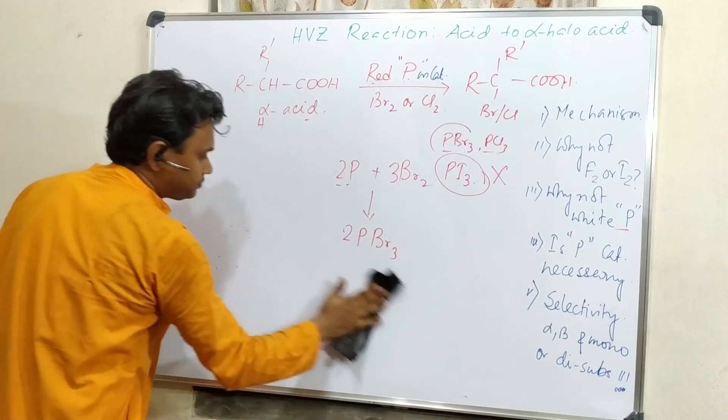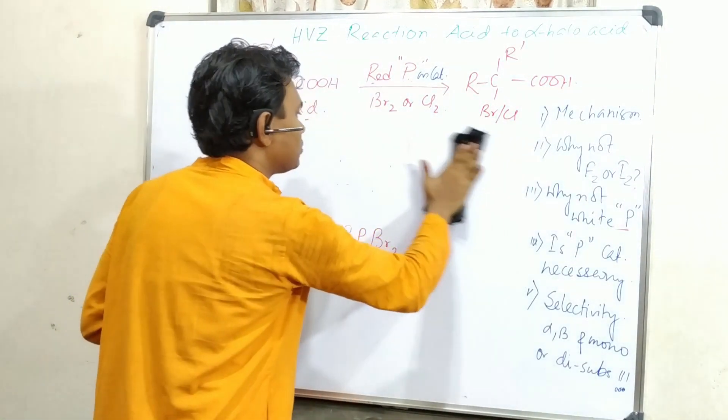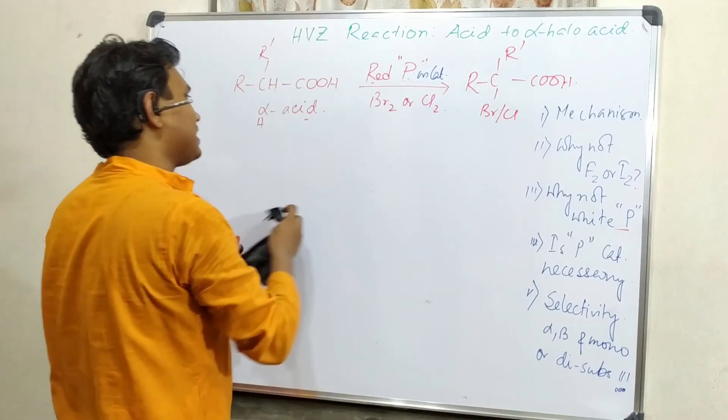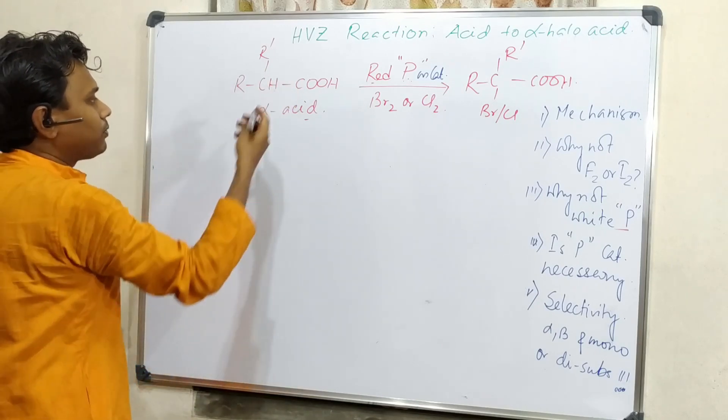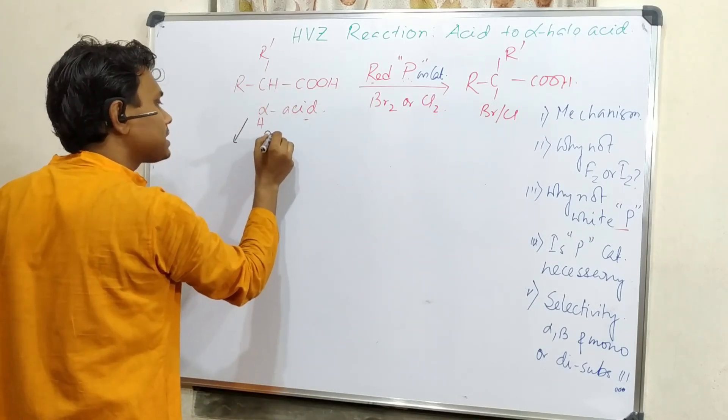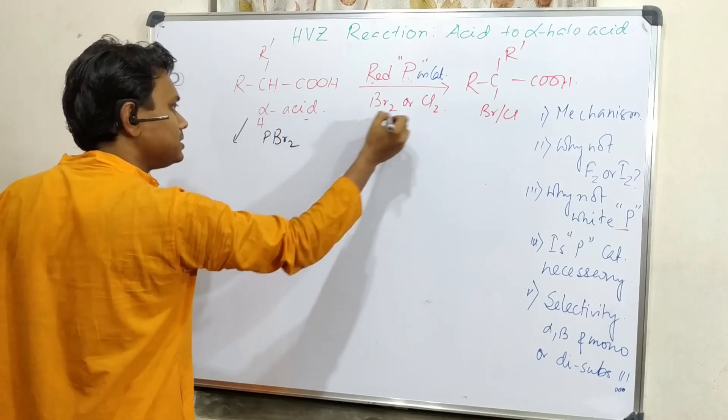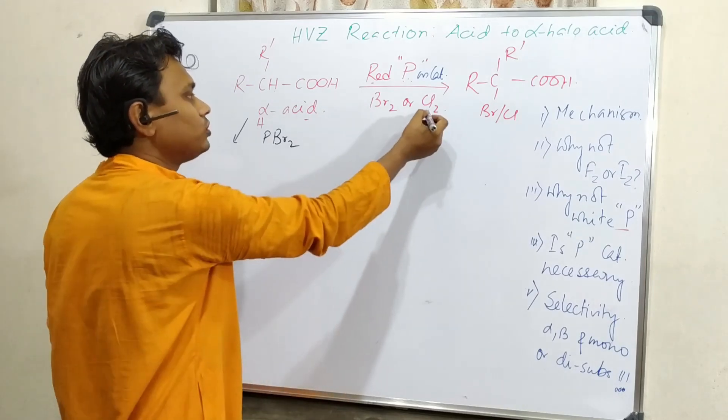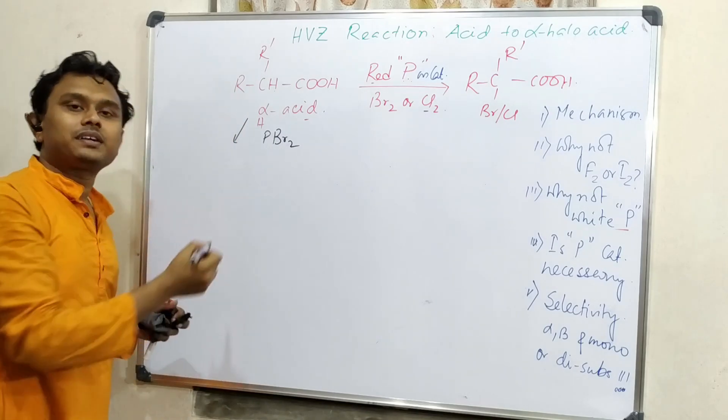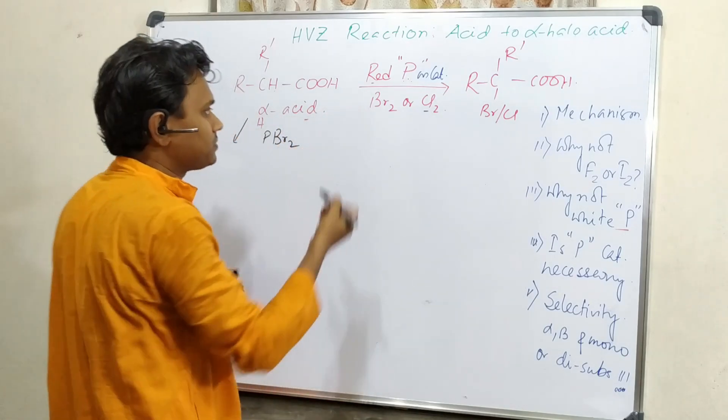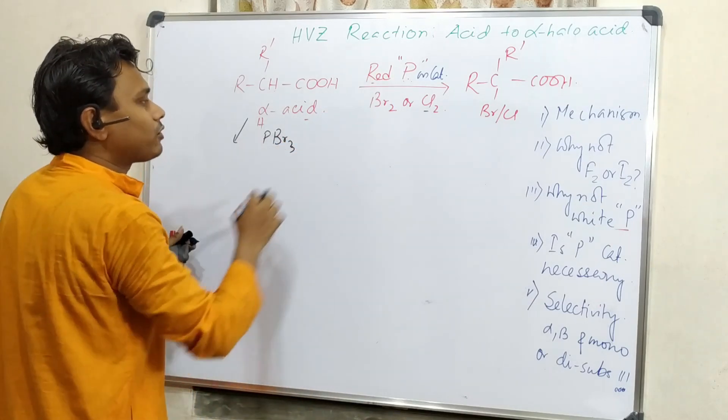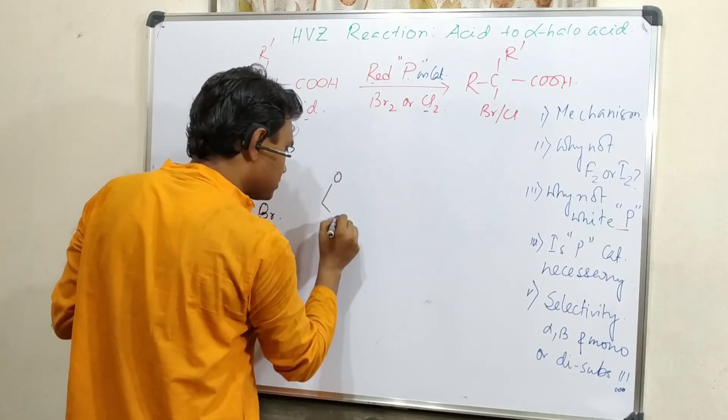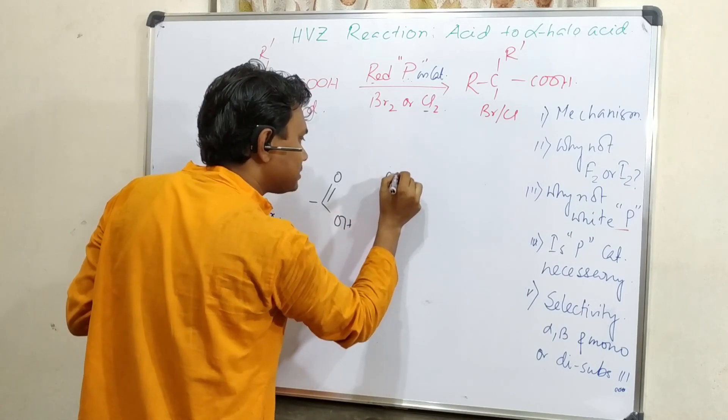So basic things we have discussed. And let's start the main mechanistic description. So here the reaction is happening through enolization. Before enolization what's happening, this carboxylic acid is converted in presence of phosphorus, let's consider PBr3 instead of chlorine. And another thing, why we are not preferring chlorine? Actually chlorine is less preferred over bromine because of chlorine's higher reactivity. That can result in beta, gamma that type of halogenation. So that's why it is better to use bromine.